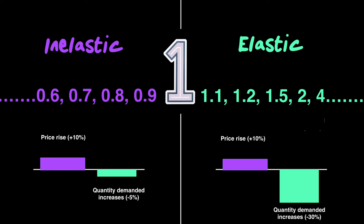PED helps you determine what kind of product you're selling. For DA Explorer, with a PED of 1.3, they know it's an elastic product — increasing price even slightly from one hundred and eighty to two hundred dollars could cause a proportionally larger drop in demand. Ultimately, understanding the relationship between price and demand helps you choose the strategy that brings in the most revenue.